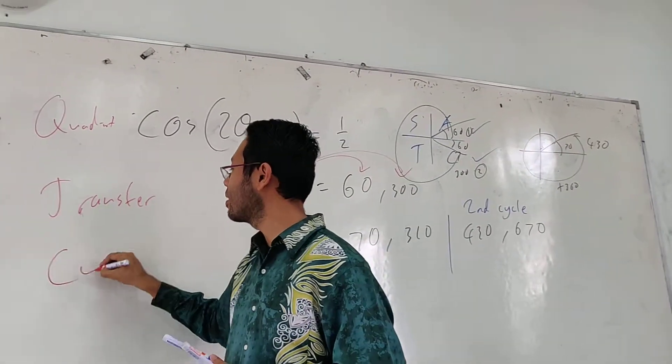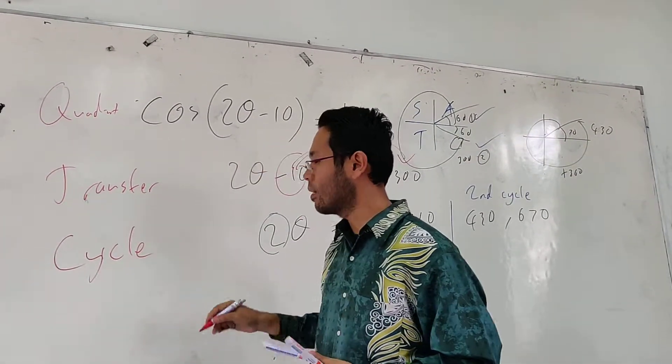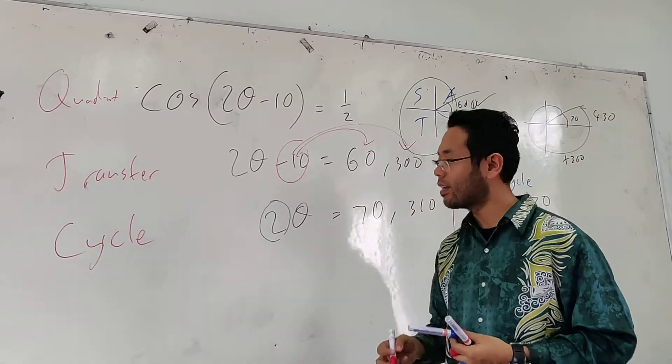Step one is the cycle. QTC. Finally. And then you divide.